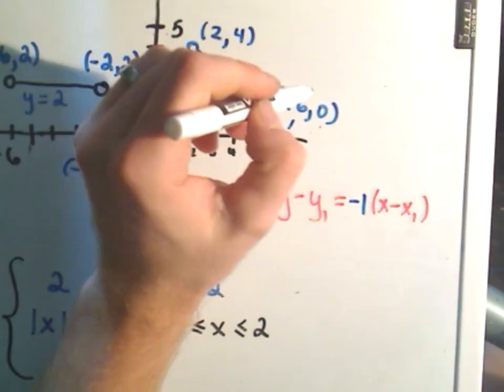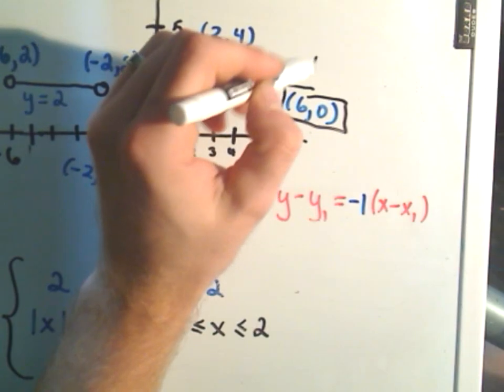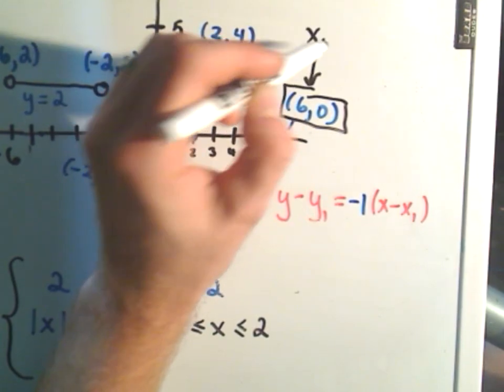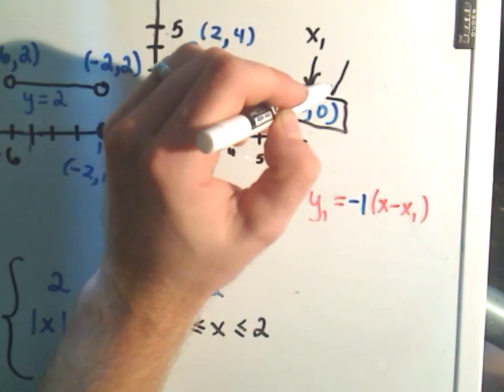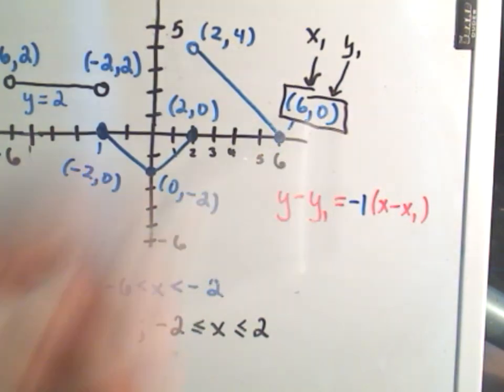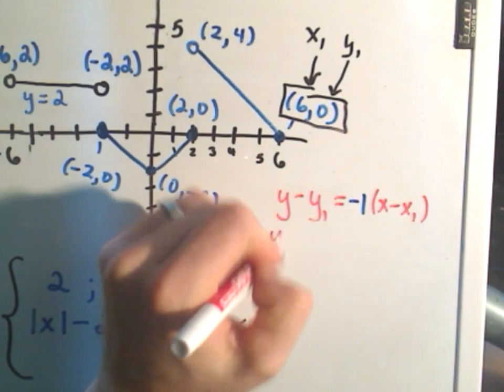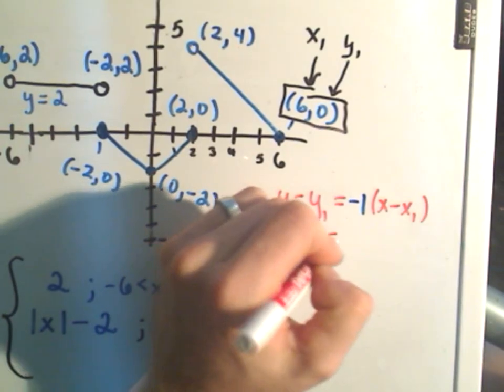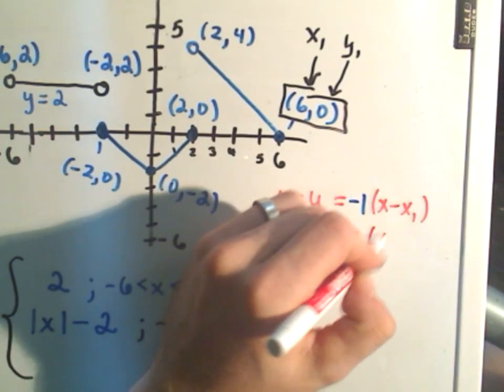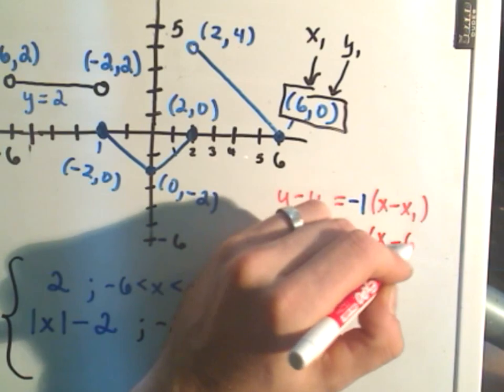So I'm going to pick this point on the right-hand side. Again, I plug in x₁ as being 6. I'll plug in y₁ as being the value 0. So it says we get the equation y - 0 = -1 times (x - 6).